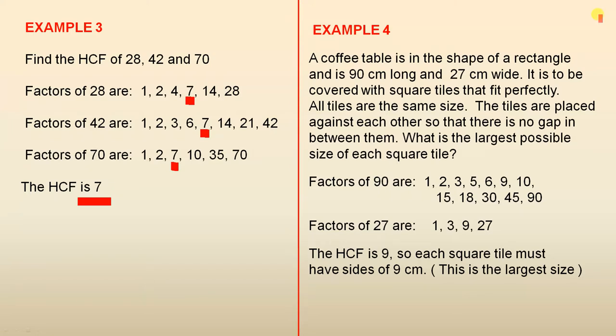The highest common factor can be used in real life to solve everyday problems, and here is a neat little example. A coffee table is in the shape of a rectangle and is 90 centimeters long and 27 centimeters wide. It is to be covered with square tiles that fit perfectly. All tiles are the same size. The tiles are placed against each other so that there is no gap in between them. What is the largest possible size of each square tile?